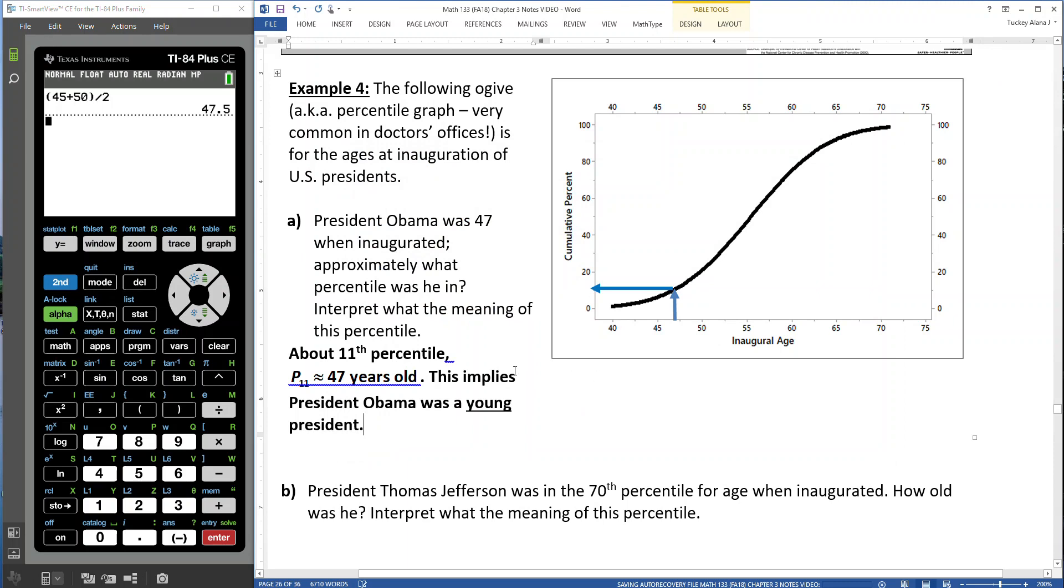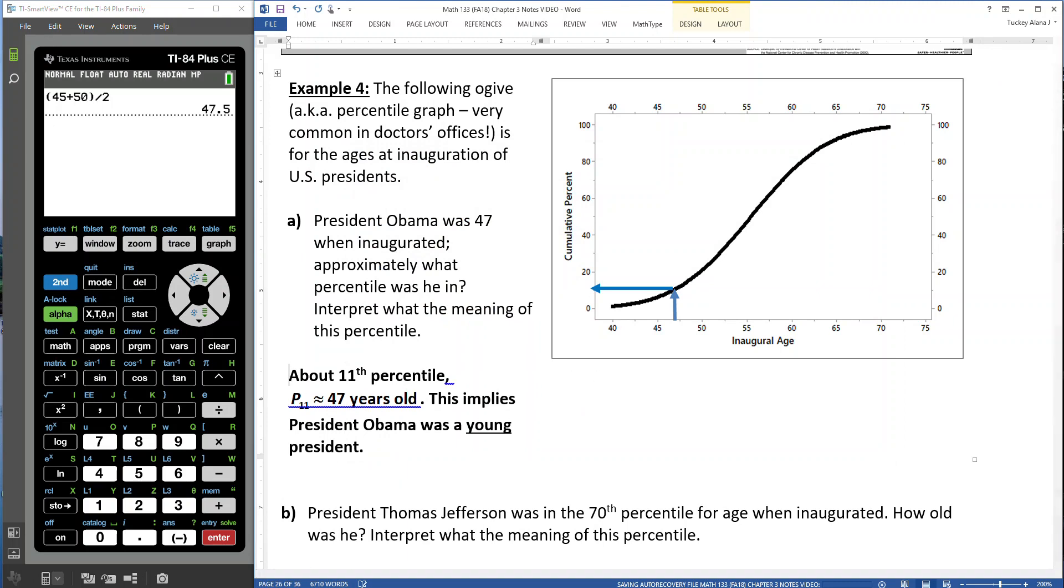And that means, of course, what's more important to us is how we interpret this. So that interpretation piece is what does that mean for him as a president? Well, he was actually a young president. Only 11% of presidents were younger than him or at his age or younger.